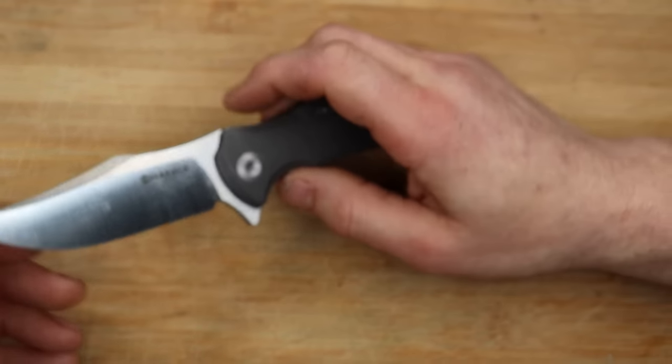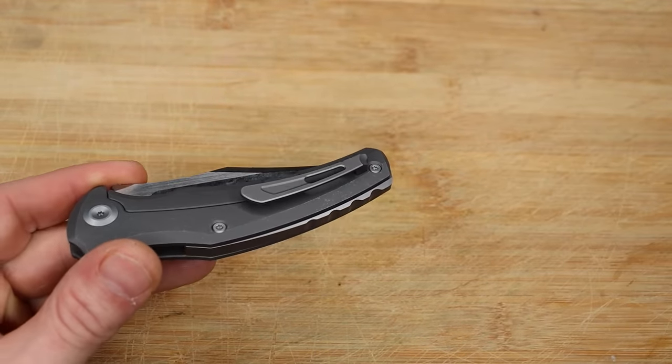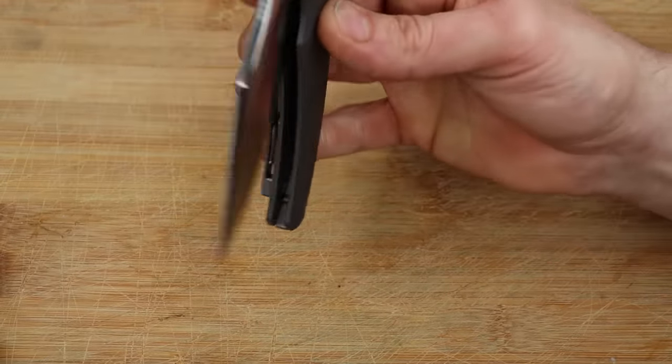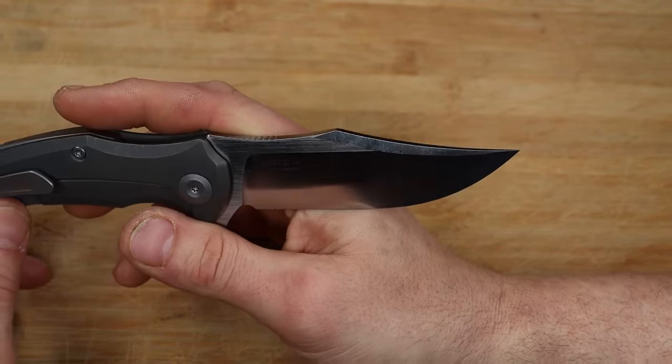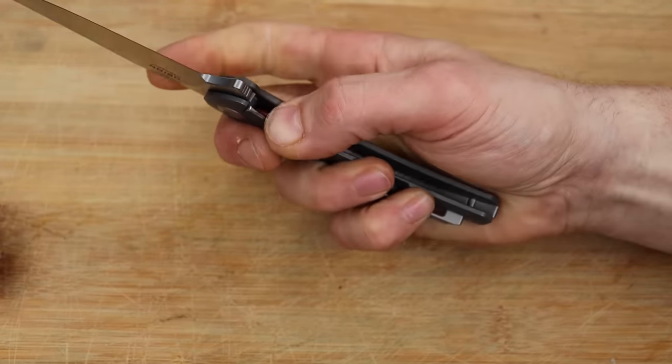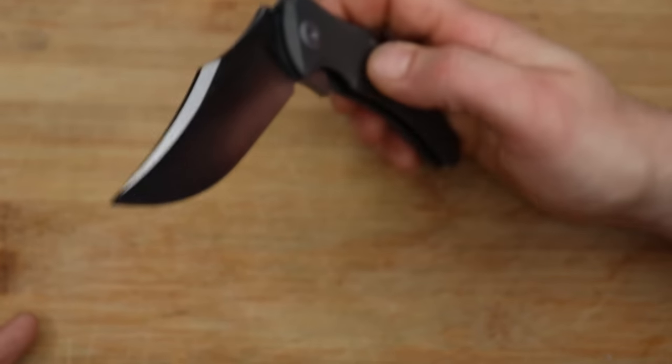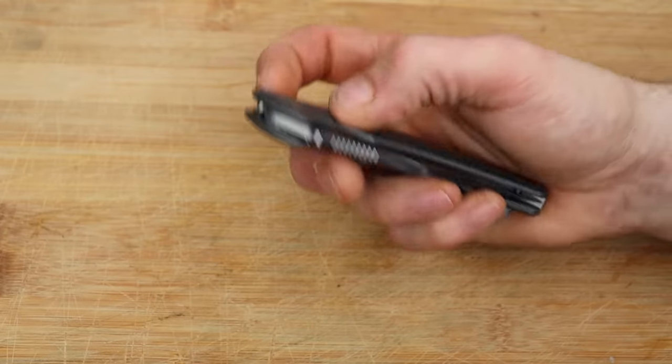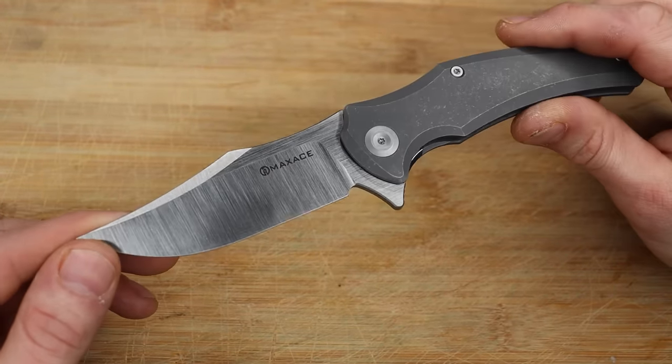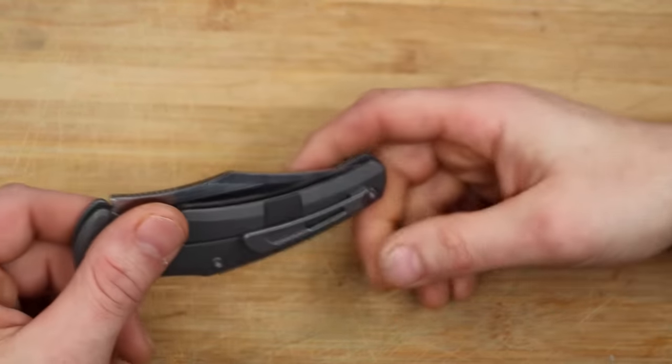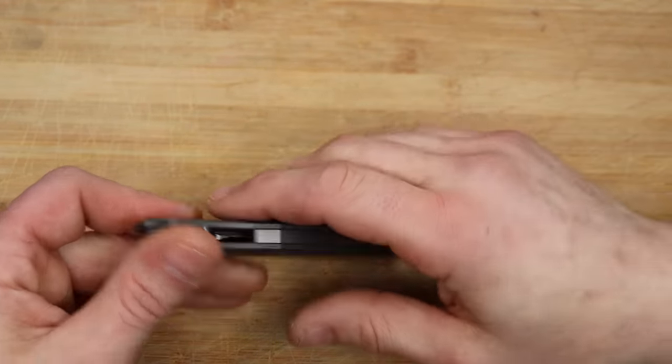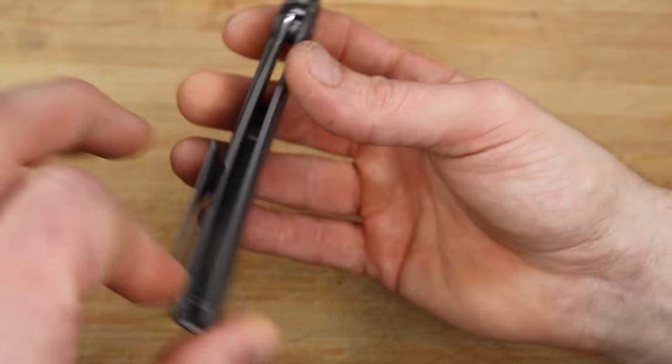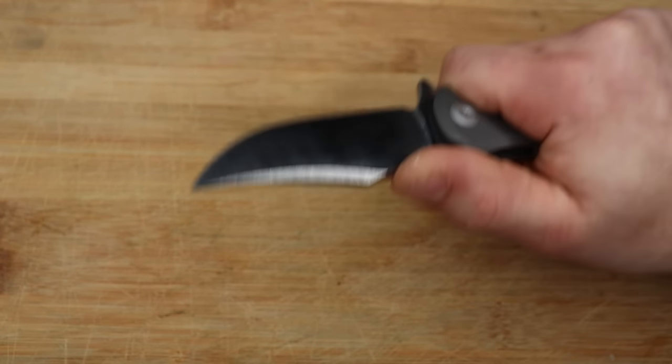Other than maybe putting a larger choil or moving the plunge grind back, the only other thing is I wish the HRC was a little bit higher on the MagnaCut. For under $200 bucks it's still gonna hold a good edge, it's just not going to take and hold the most incredible edges for as long as it possibly could. MaxAce seems to try to go for toughness. There's no milling on the inside so it definitely has some weight, but I actually like the weight.